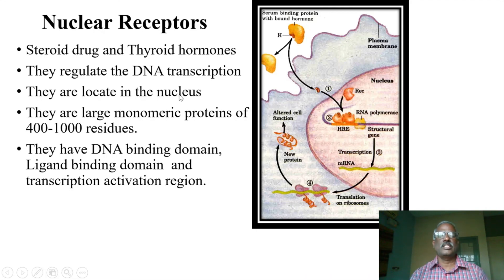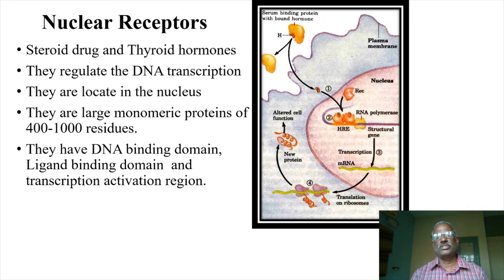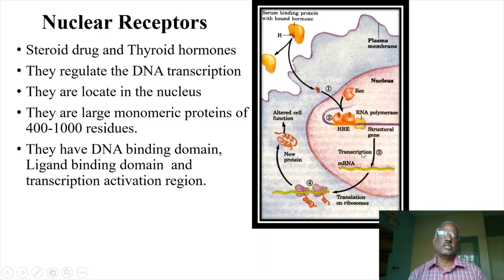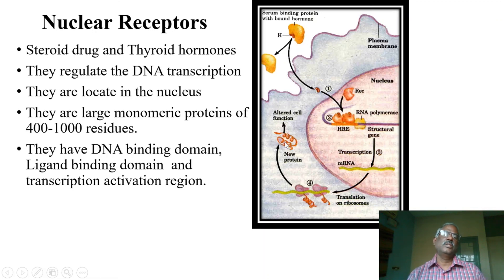These receptors are located inside the nucleus. They are large monomeric proteins of 400 to 1000 residues. There will be a DNA binding domain, a ligand binding domain, and a transcription activation region. The cytoplasm translocates to the nucleus, and activation of the structural gene leads to transcription. This results in protein synthesis and new proteins, which leads to alteration of cell function.